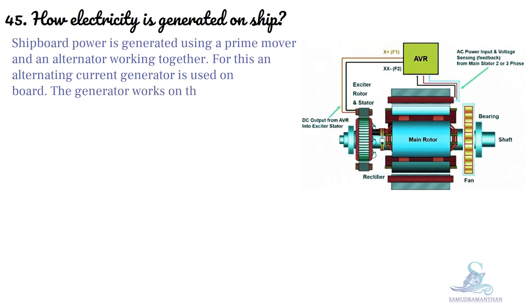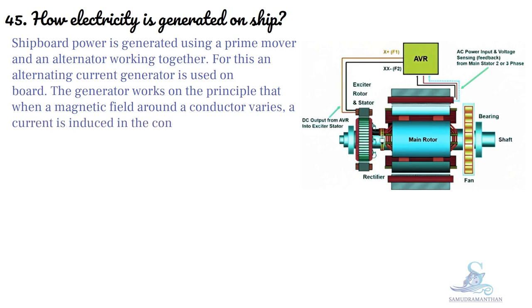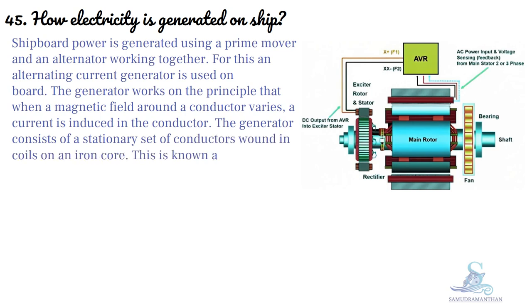The generator works on the principle that when a magnetic field around a conductor varies, a current is induced in the conductor. The generator consists of a stationary set of conductors wound in coils on an iron core, known as the stator.